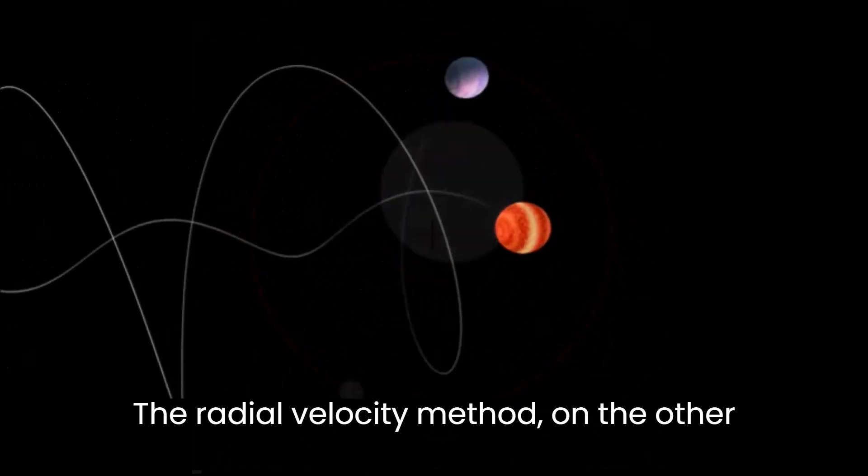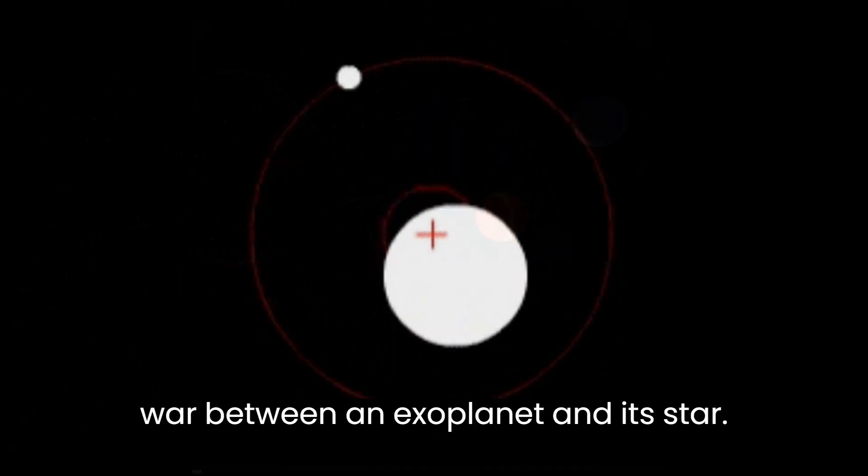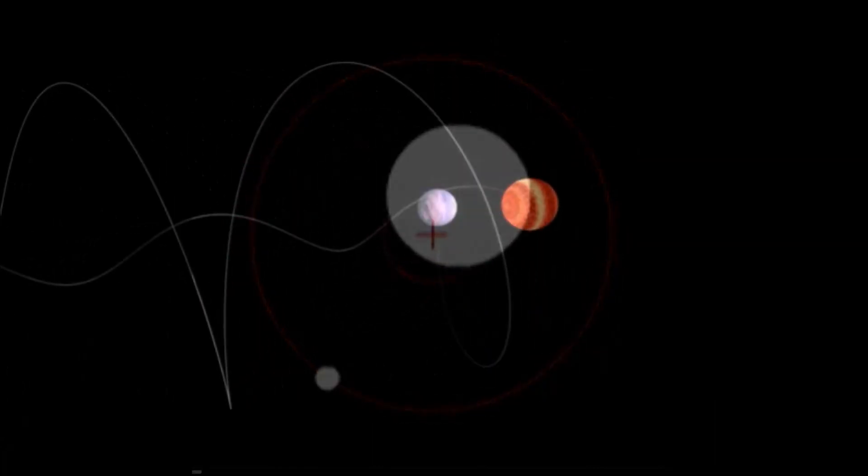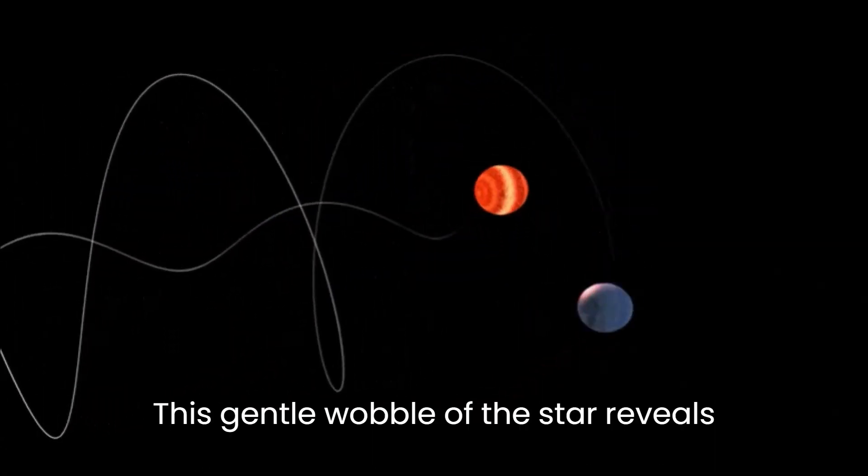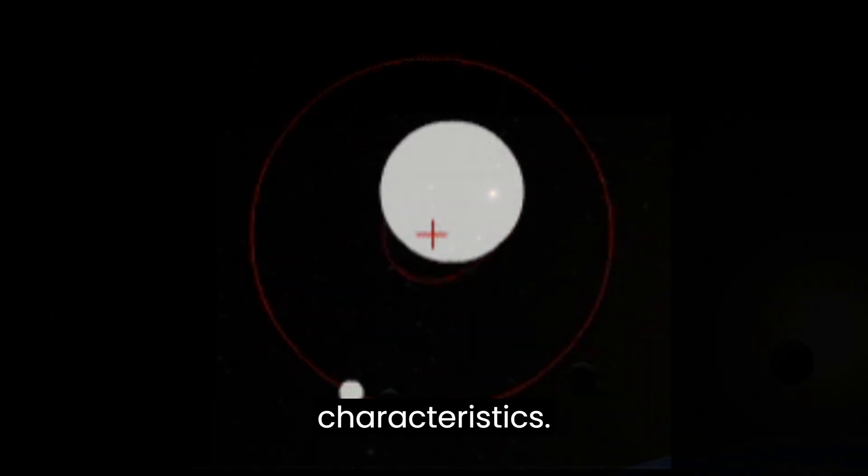The radial velocity method, on the other hand, relies on the gravitational tug of war between an exoplanet and its star. This gentle wobble of the star reveals the planet's presence and provides insight into its mass and orbital characteristics.